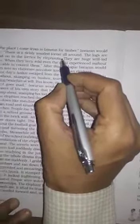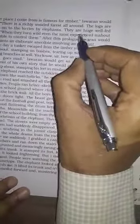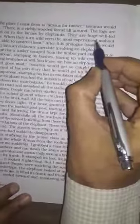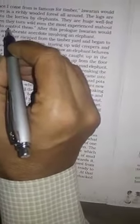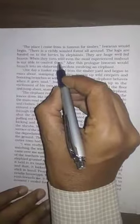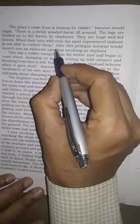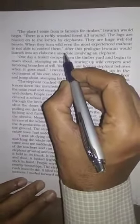And there is a richly wooded forest all around. He further said that that place is richly wooded forest all around. The logs are hauled. In that jungle, the logs are loaded onto the vehicles by elephants. Because they are huge well-fed beasts, elephants are strong beasts. Further, he said about the elephants that when they turn wild, when the elephants became wild, even the most experienced mahout is not able to control them. The mahout who looks after the elephant, he is not able to control over elephants.